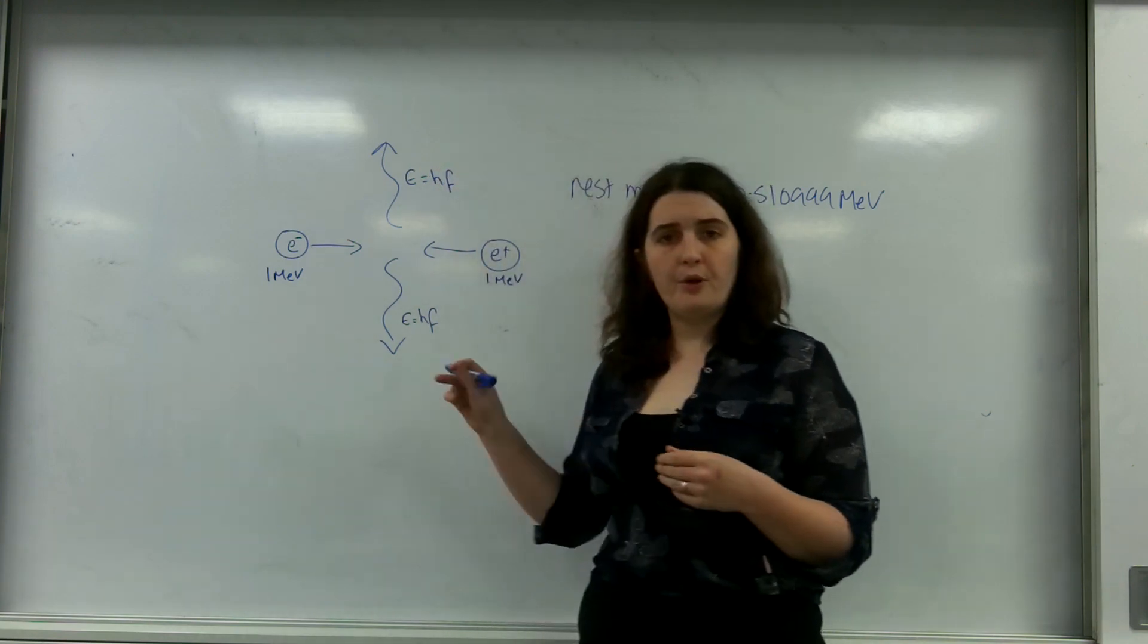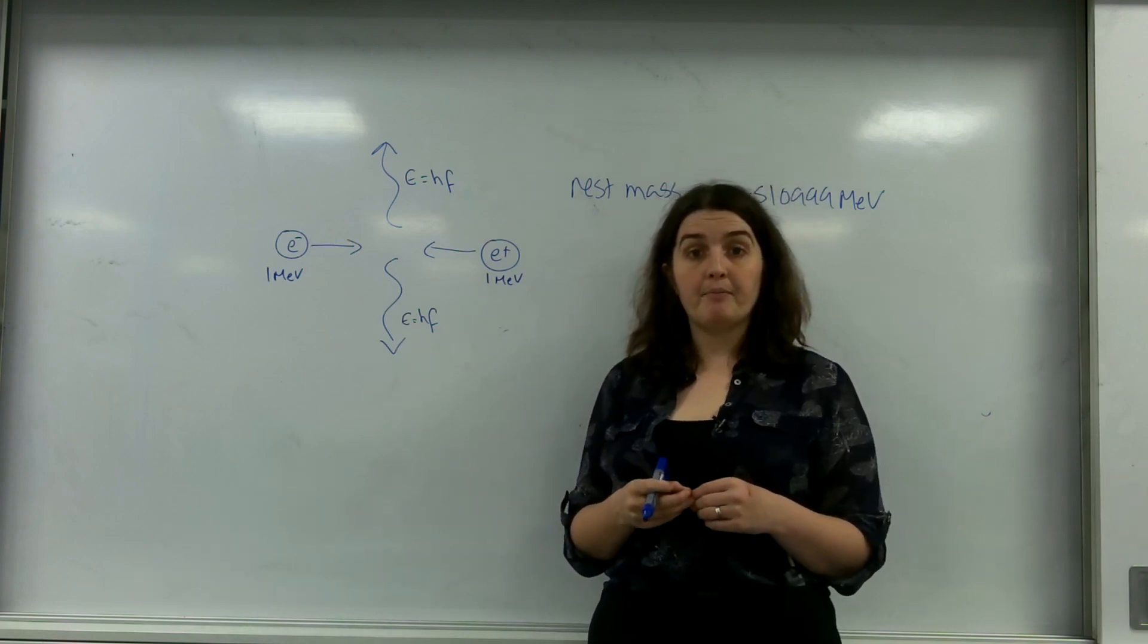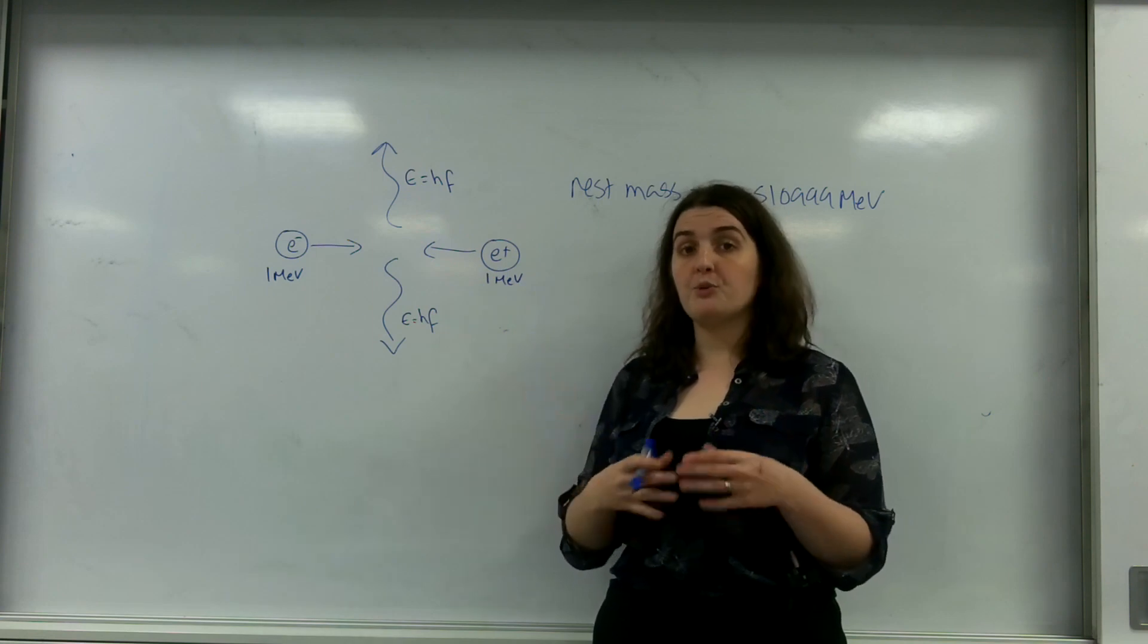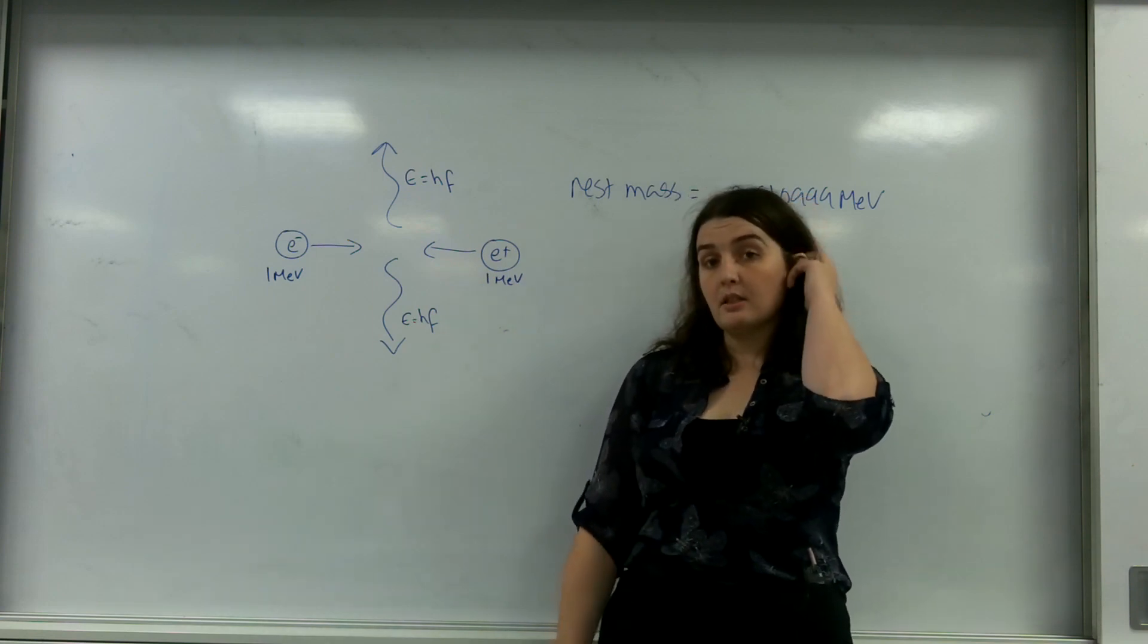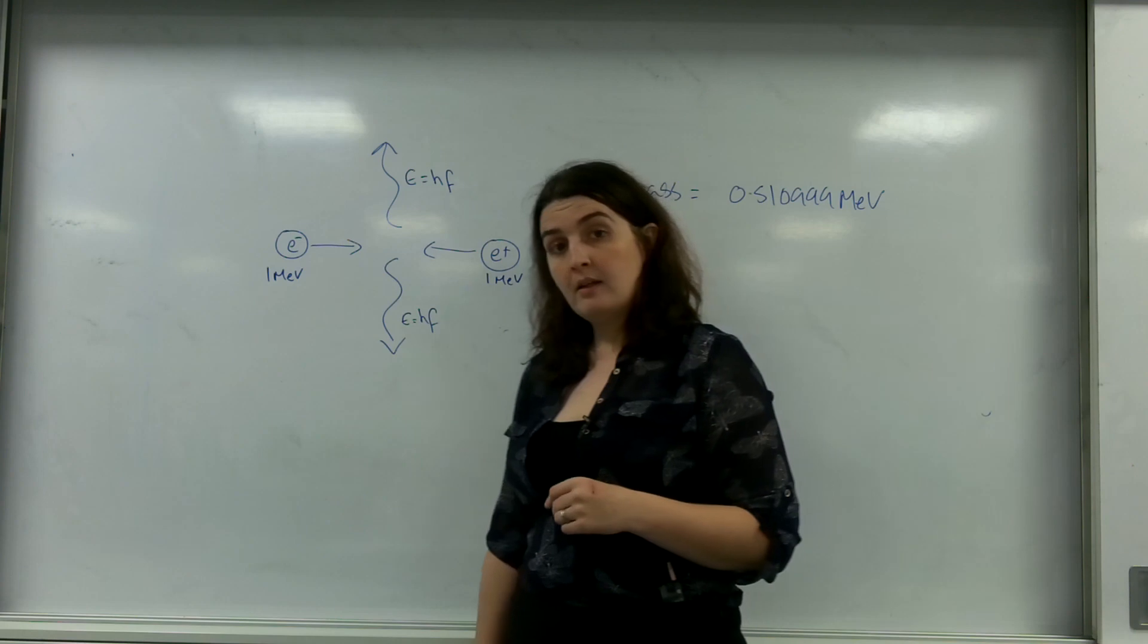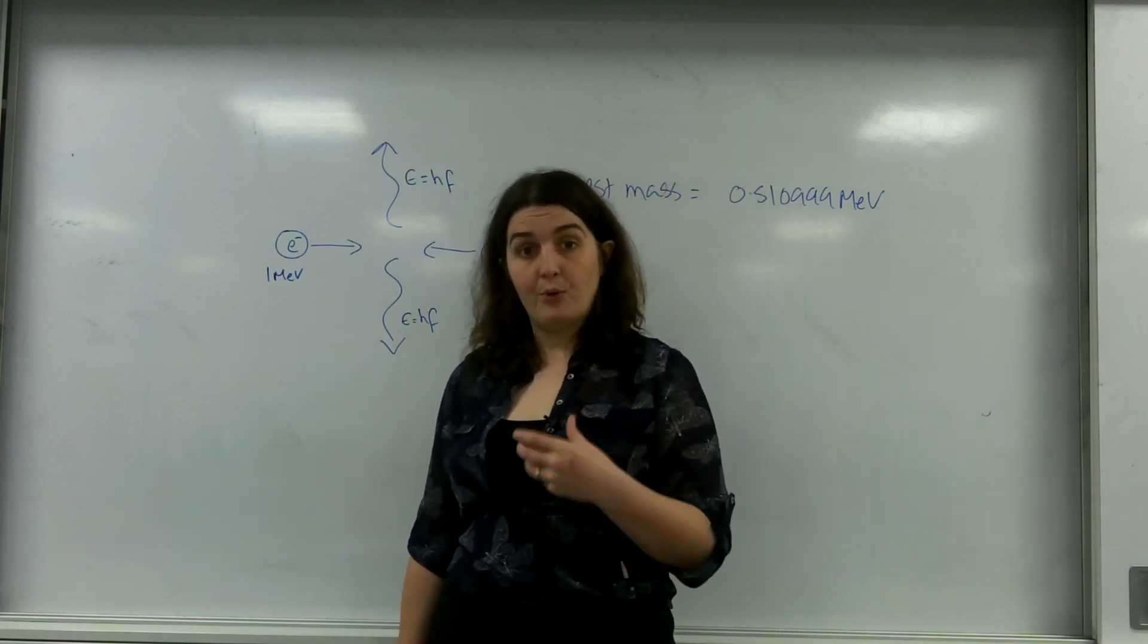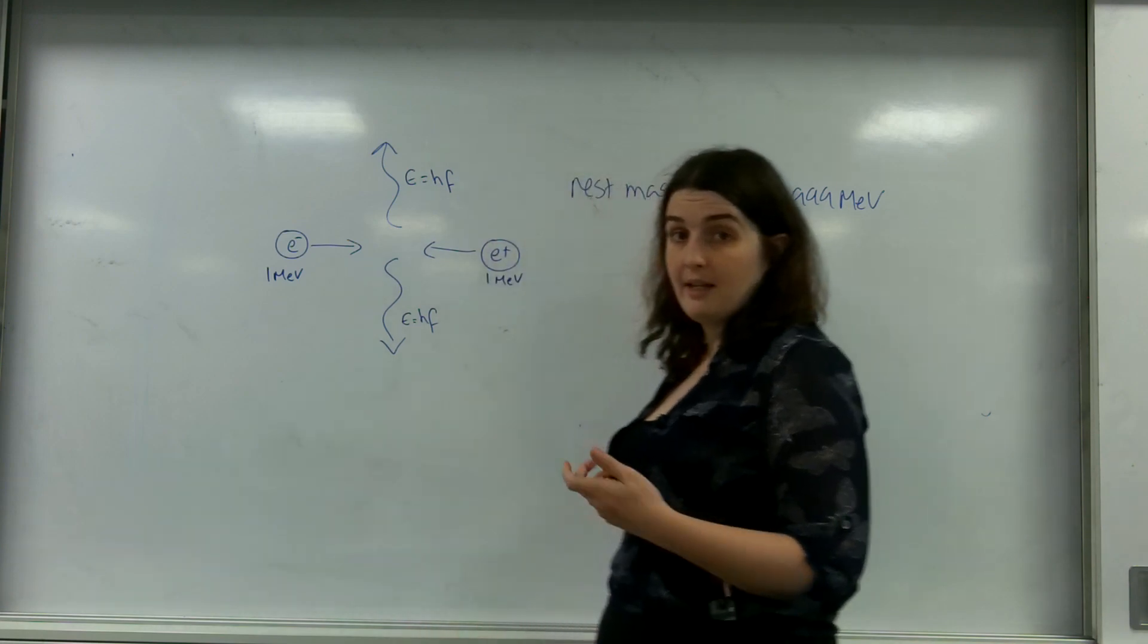It's important to note that the photons that would be released would be the same. So the photons that would be released in both directions would be the same, and they're being released perpendicular to conserve momentum. So let's actually find out how much energy I have before we work out the energy the photons have.